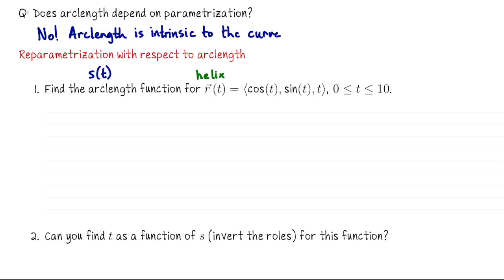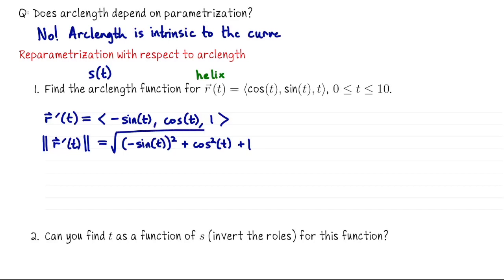To get that, the first thing we need to do is compute the velocity vector. So r prime of t is term-by-term differentiation. That's going to be negative sine of t, cosine of t, 1. The next thing we need to do is find the speed. So let's compute the magnitude of this vector. So that's going to be the square root of negative sine of t squared plus cosine squared plus 1. Sine squared plus cosine squared is 1, so overall this is the square root of 2.